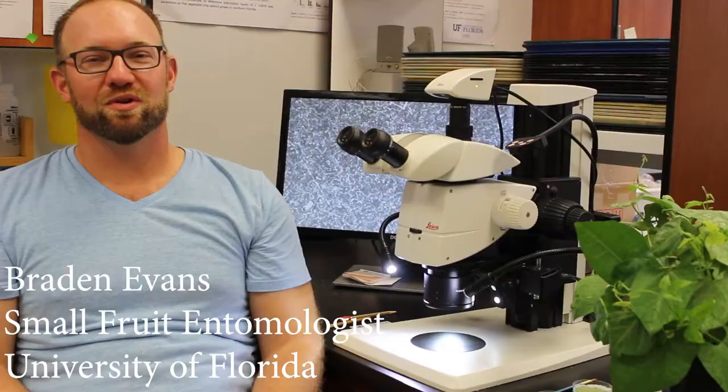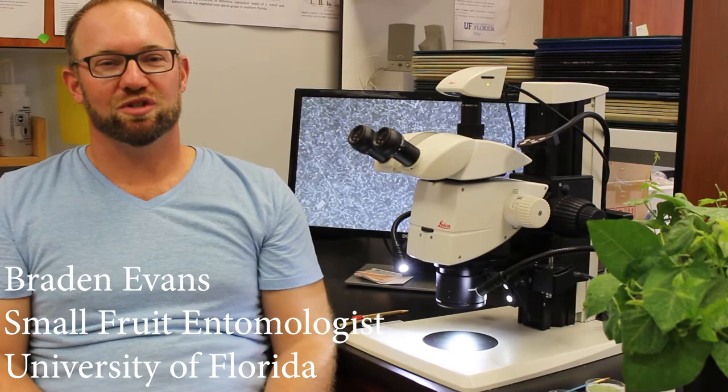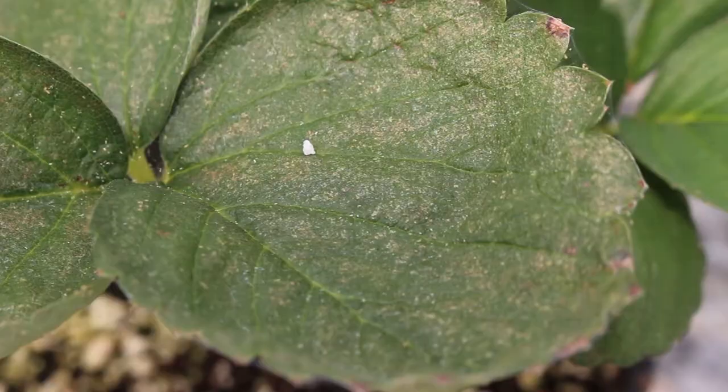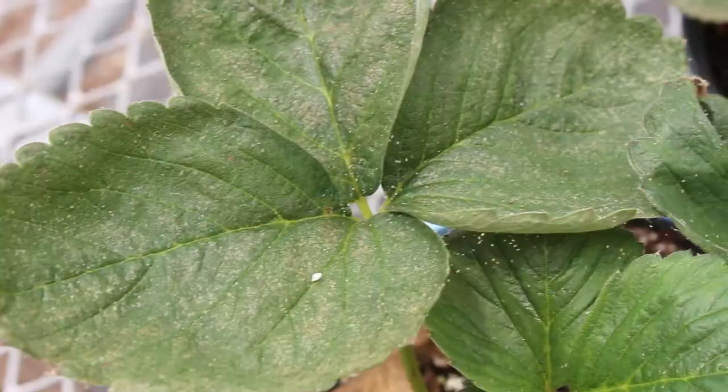A significant arthropod pest problem for strawberry growers here in the Plant City area is the two-spotted spider mite, a species named Tetranychus urticae. They're tiny microscopic mites found all over the world, and they feed on the foliage of strawberry plants and a number of other fruit and vegetable crops.